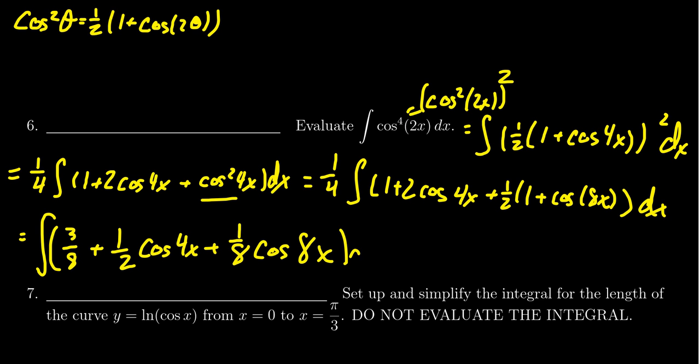And now we're ready to take the antiderivative. So when we put all of this together, the 3 8ths, when you take the antiderivative, become 3x over 8. Then for the next one, we have a 1 half cosine of 4x. As you take the antiderivative of cosine, it becomes sine. But then by the chain rule, you do have to divide by that 4 there. So we're going to end up with a 1 8th sine of 4x.